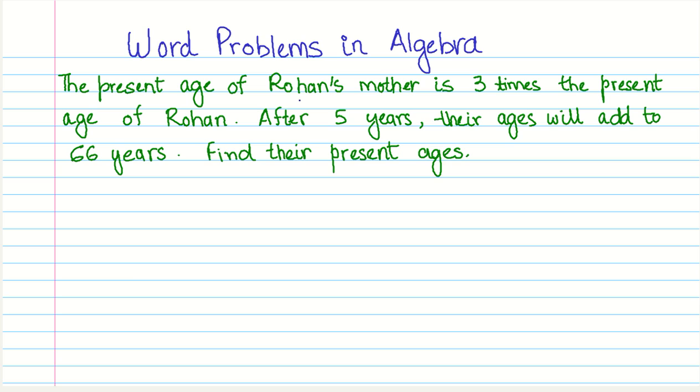The present age of Rohan's mother is three times the present age of Rohan. So that gives us the first condition. After five years, their ages will add to 66 years. Find their present ages.